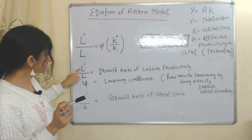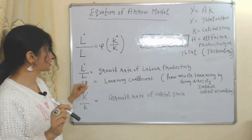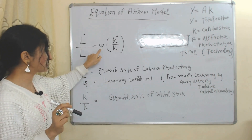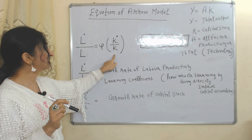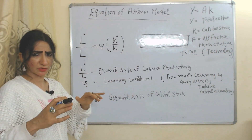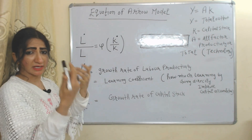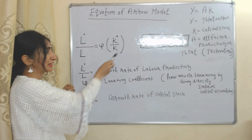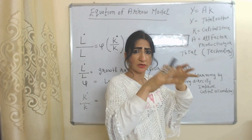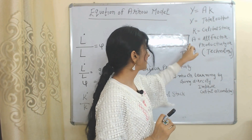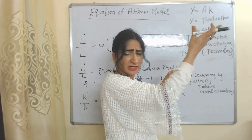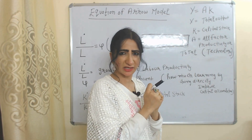In the Arrow model equation, L-dot over L represents the growth rate of labor productivity, and K-dot over K represents the growth rate of capital stock. A symbol represents how much learning by doing directly improves capital accumulation. The second equation is Y = AK, where Y is total output, K is capital stock (including both human and physical capital), and A is total factor productivity, which mainly depends on technology. Overall, this equation explains that output depends on capital accumulation and technology.